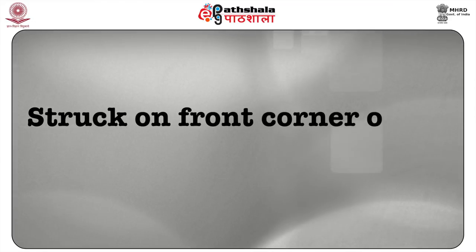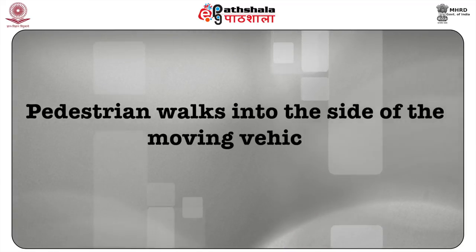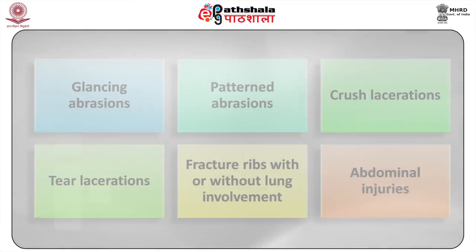When the person is struck on the front corner of the car, the person is knocked diagonally out of the path and may be run over by other cars coming from behind. When the pedestrian walks into the side of a moving vehicle, there may be injuries on the side of the face, chest, and arms in the form of glancing abrasions, pattern abrasions, crush lacerations, tear lacerations, fractured ribs with or without lung involvement, and abdominal injuries.